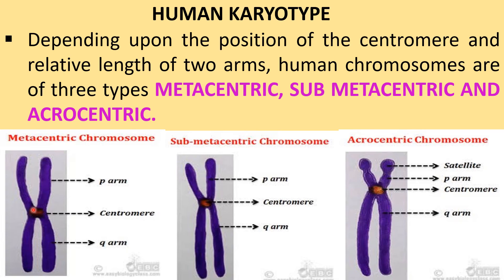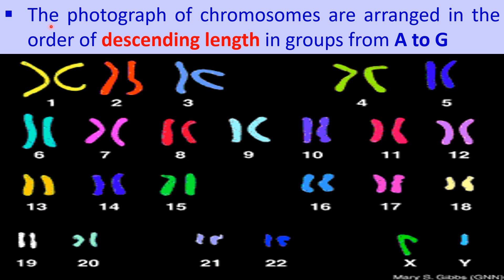Depending upon the position of the centromere or kinetochore and the relative length of the two arms, human chromosomes are of three types: metacentric, sub-metacentric, and acrocentric. The photographs of chromosomes are arranged in order of descending lengths, grouped from A to G.